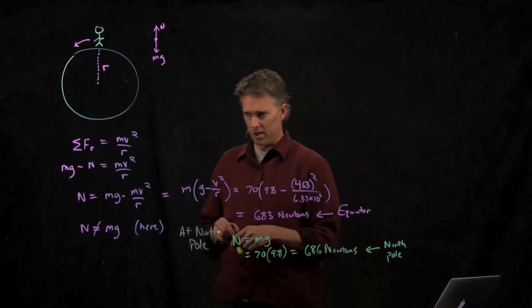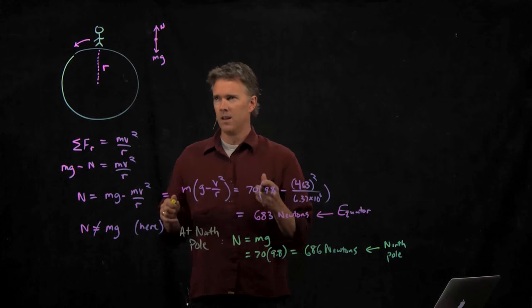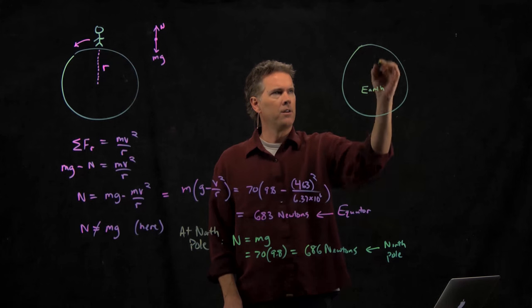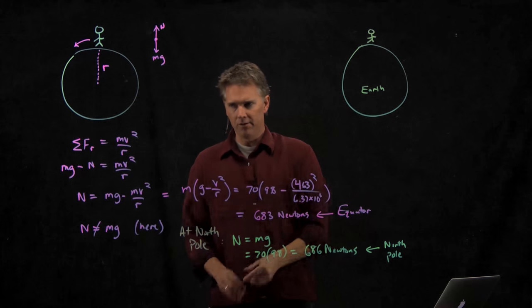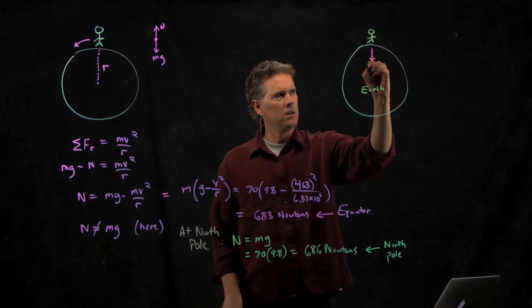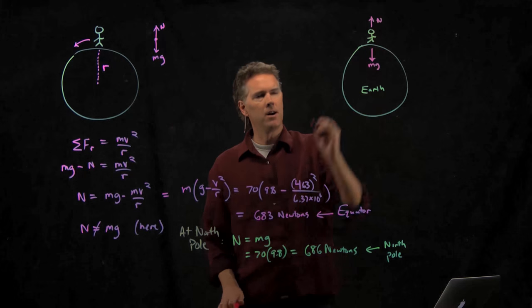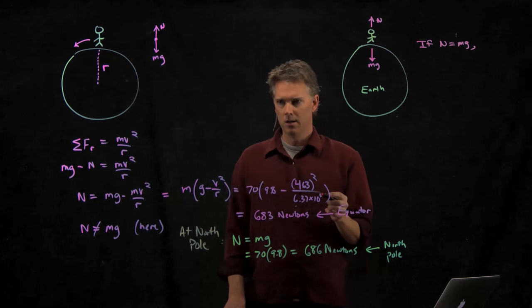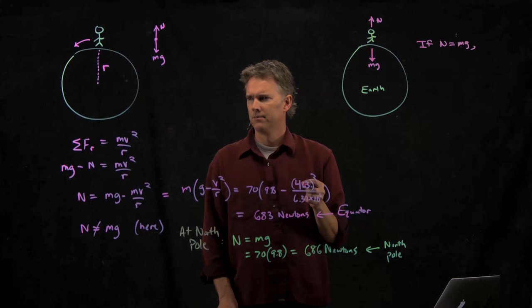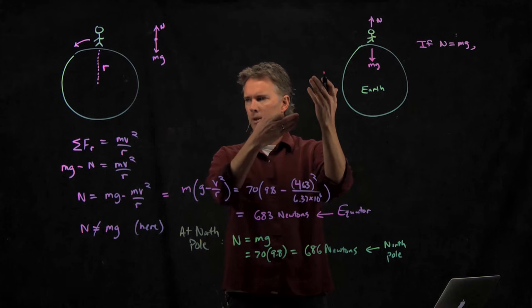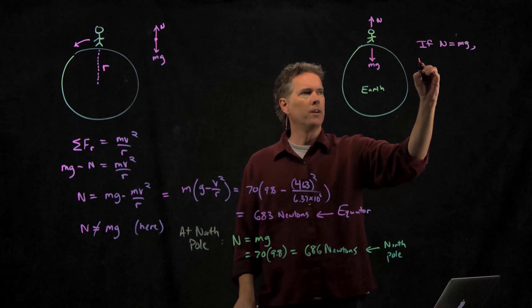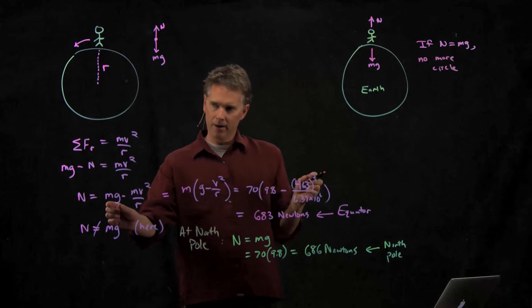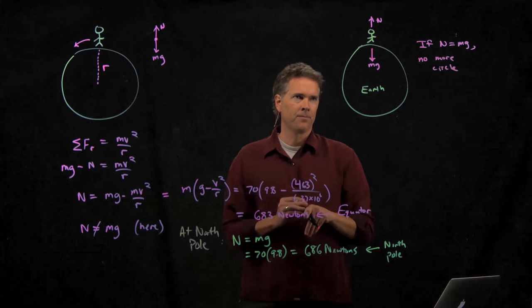The ground is not pushing up on you with mG because you're moving in a circle. So let's go back to this picture for a second. Here's the Earth. Here you are. And there are forces that are acting on you. MG is down. The normal force is up. Now, if that normal force was exactly equal to mG, then you wouldn't be moving in a circle.